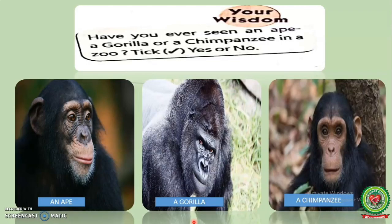Now we read 'Your Wisdom.' Have you ever seen an ape, a gorilla, or a chimpanzee in a zoo? Tick yes or no. Look at the pictures, think, and tick the correct answer.